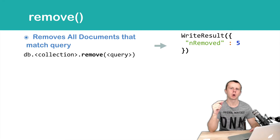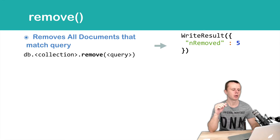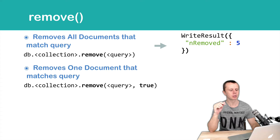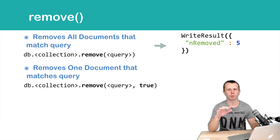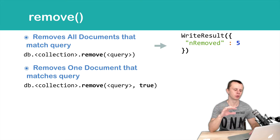If you want to delete just one document that matches a certain query, you need to use a second argument. This argument is called justOne, and you need to pass its value: true.